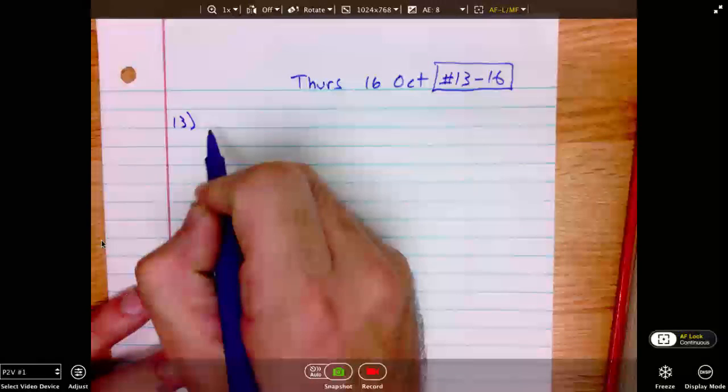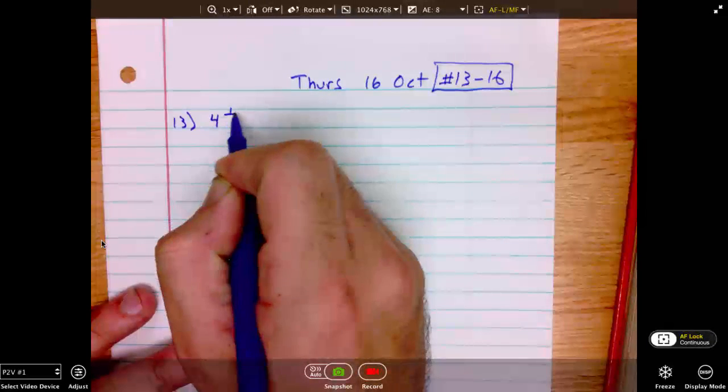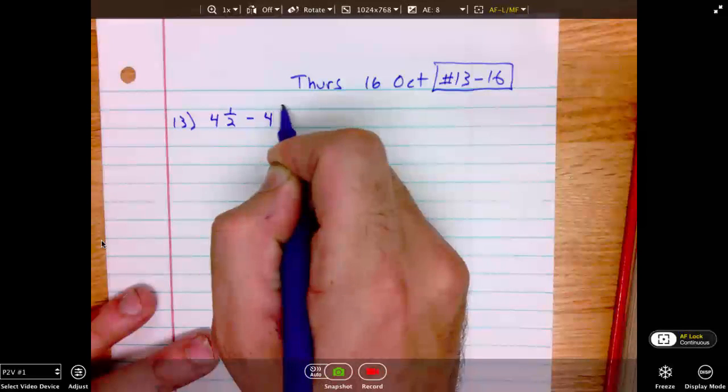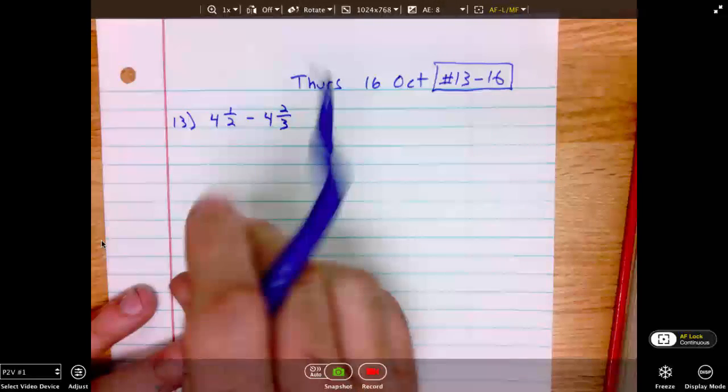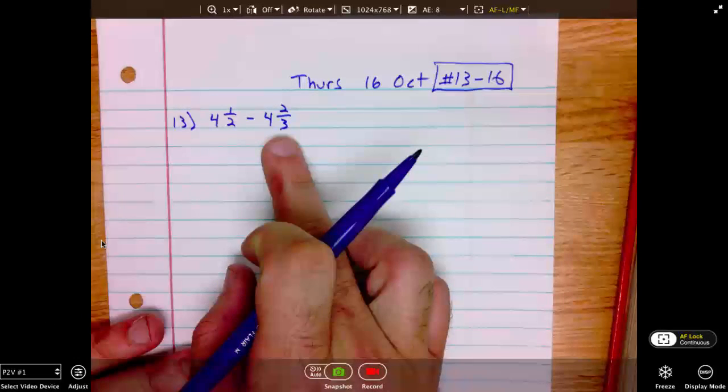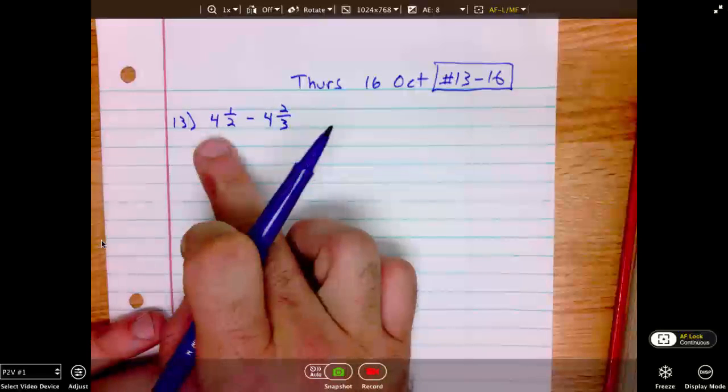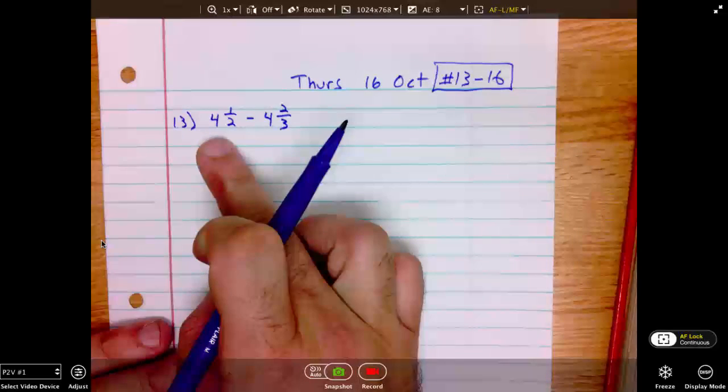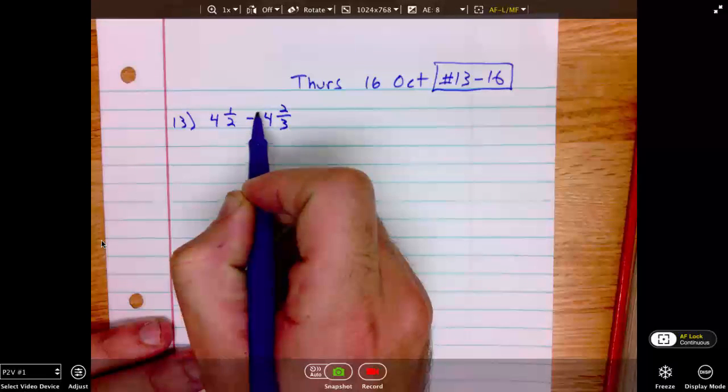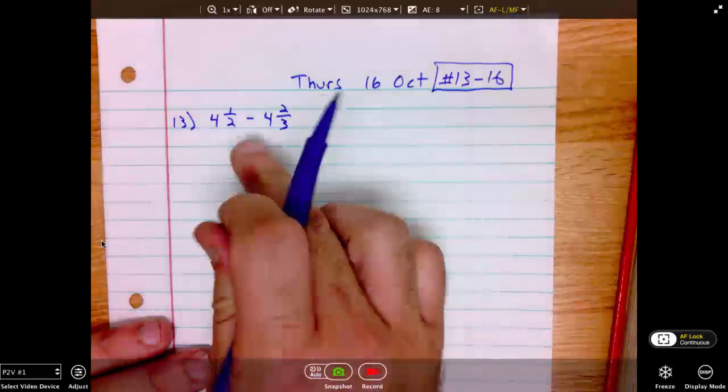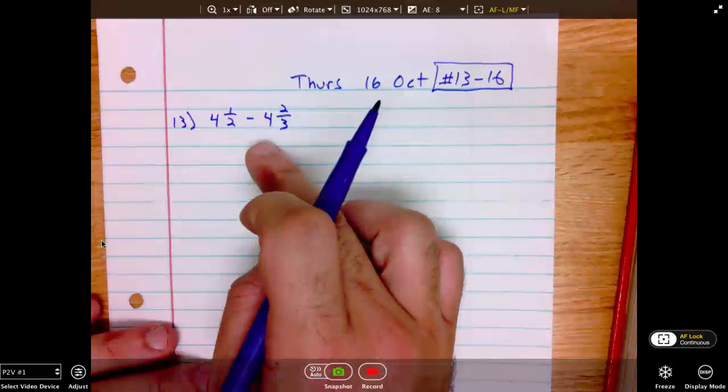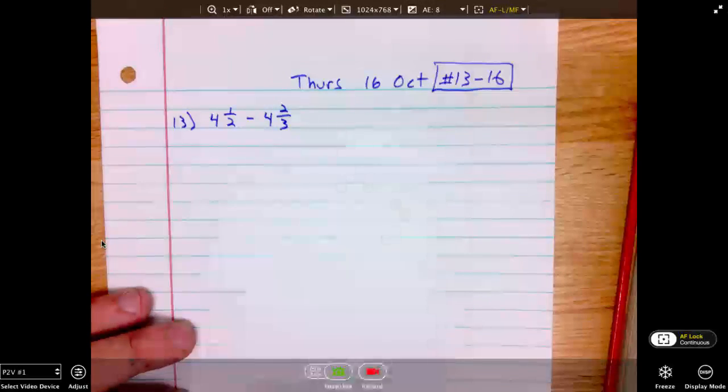Number 13 is a subtraction. 4 and 1 half minus 4 and 2 thirds. Well, this is a particular subtraction where the larger number is second. 4 and 2 thirds is slightly bigger than 4 and 1 half. So we expect the answer to be negative. We could change the addition and change the sign of the second one, but it will be just as easy to know that the answer should be negative.